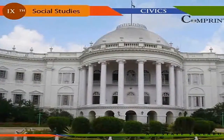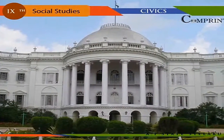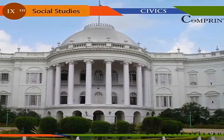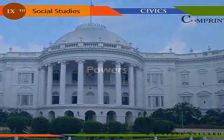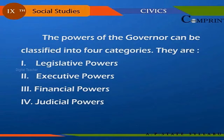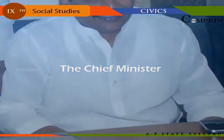The residence of the Governor is called Raj Bhavan. He is provided with rent-free accommodation besides usual pay and allowances, and he is the first citizen of the state. The powers of the Governor can be classified into four categories: legislative powers, executive powers, financial powers, and judicial powers.